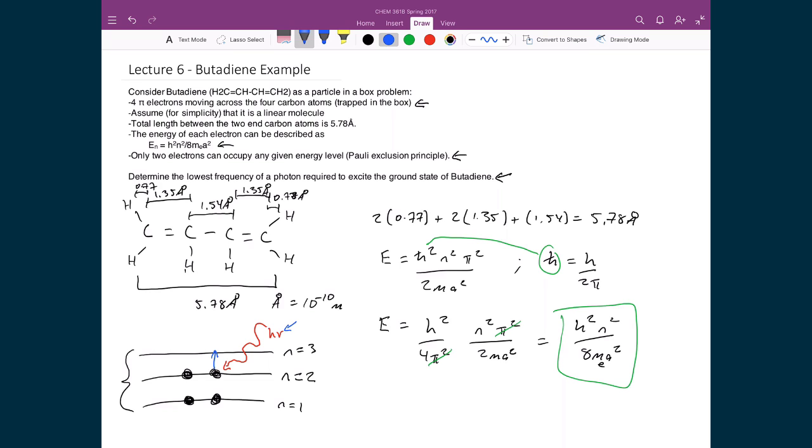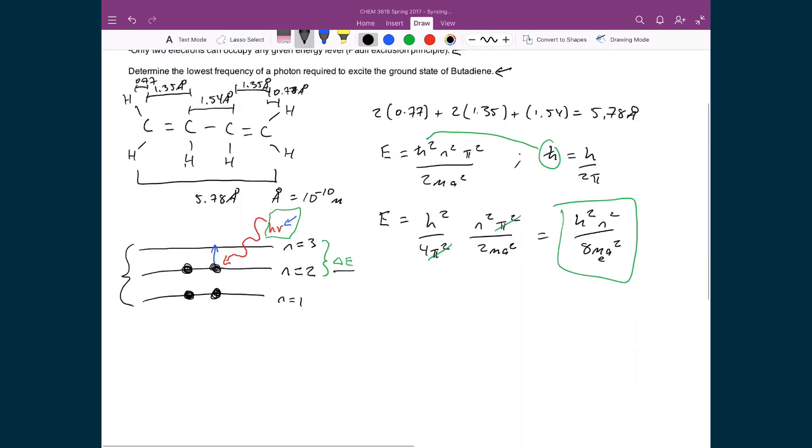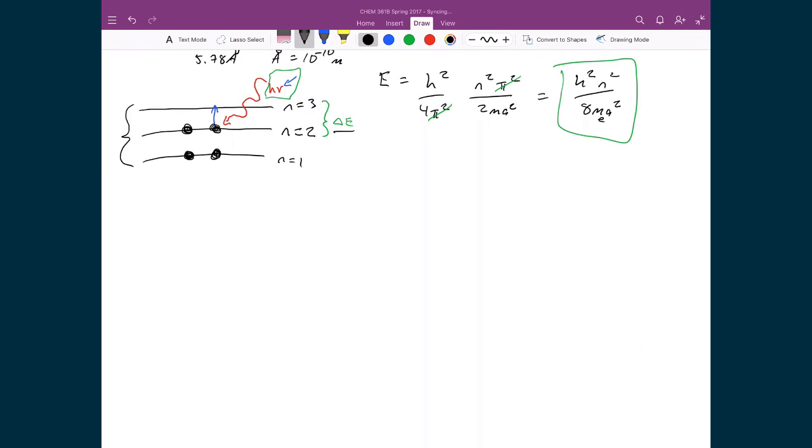Well, to know that value, all we need to do, or what we need to start with knowing, is basically what is the energy separation between these two energy levels. And then based on that, then we know the total energy of the photon that needs to come in, and then from that we can then solve for the frequency. So let's start with finding out what is this delta E between these two energy levels.